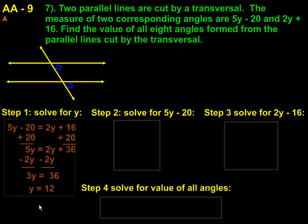We set both equations equal to each other. First thing I did was add 20 to both sides and then subtract 2y from both sides. That got 3y equals 36. And then if we divide by 3, y will equal 12.